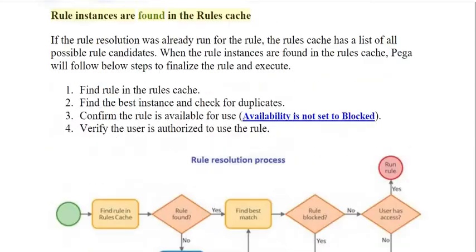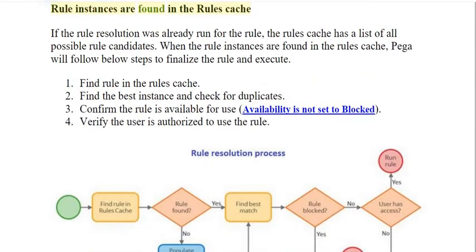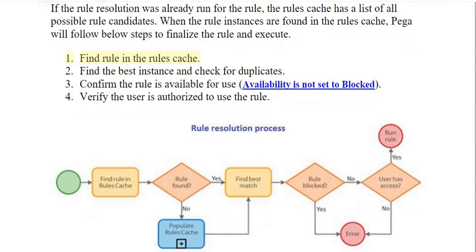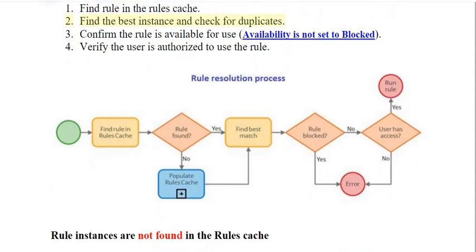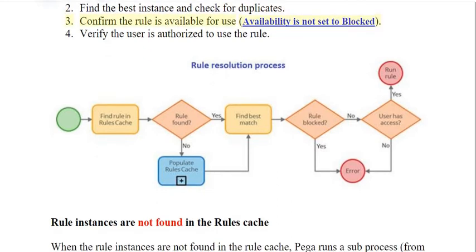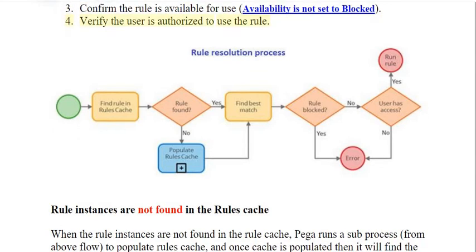If the rule resolution was already run for the rule, the rules cache has a list of all possible rule candidates. When rule instances are found in the rules cache, PEGA will follow these steps to finalize the rule and execute: 1) find the rule in the rules cache; 2) find the best instance and check for duplicates; 3) confirm the rule is available for use — availability is not set to blocked; 4) verify the user is authorized to use the rule.